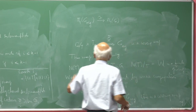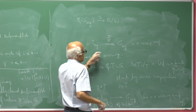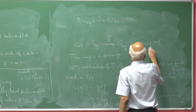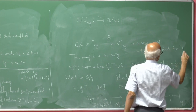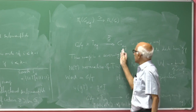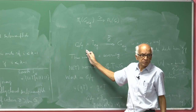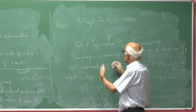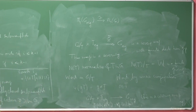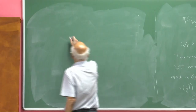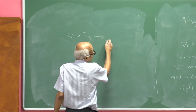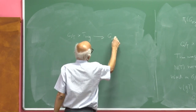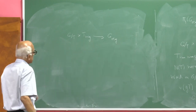W acts fixed-point-free on G/T, hence on the product, so the quotient gives a covering. This is a covering map with finite deck transformation group W. So to prove π₁(G_reg) is finite, it suffices to prove the appropriate finiteness for G/T × T_reg.